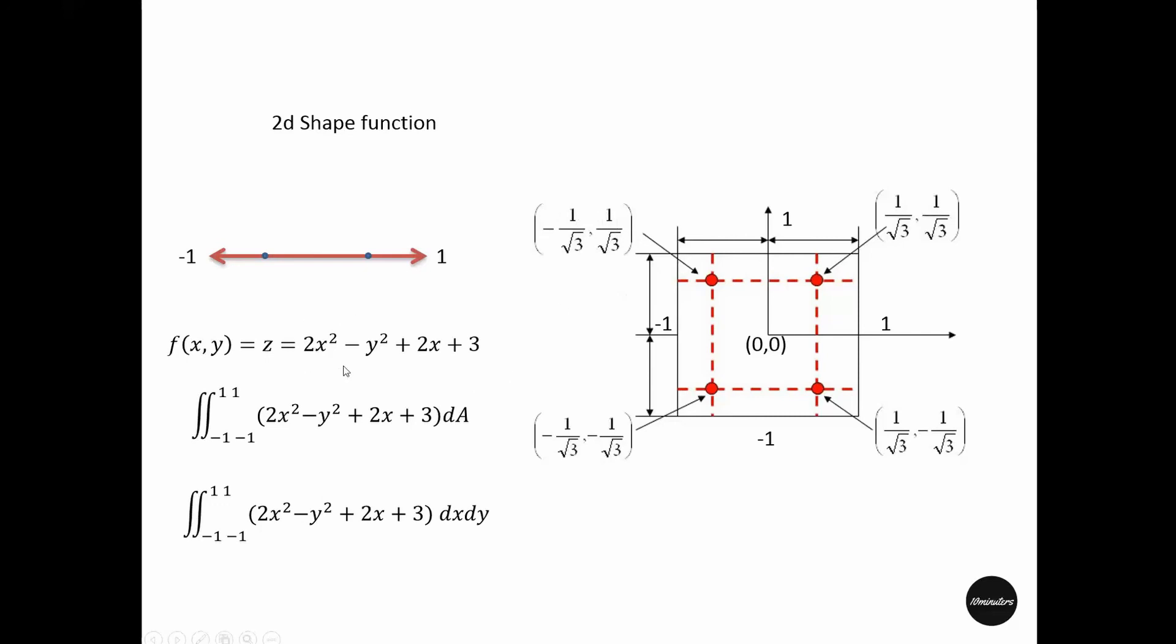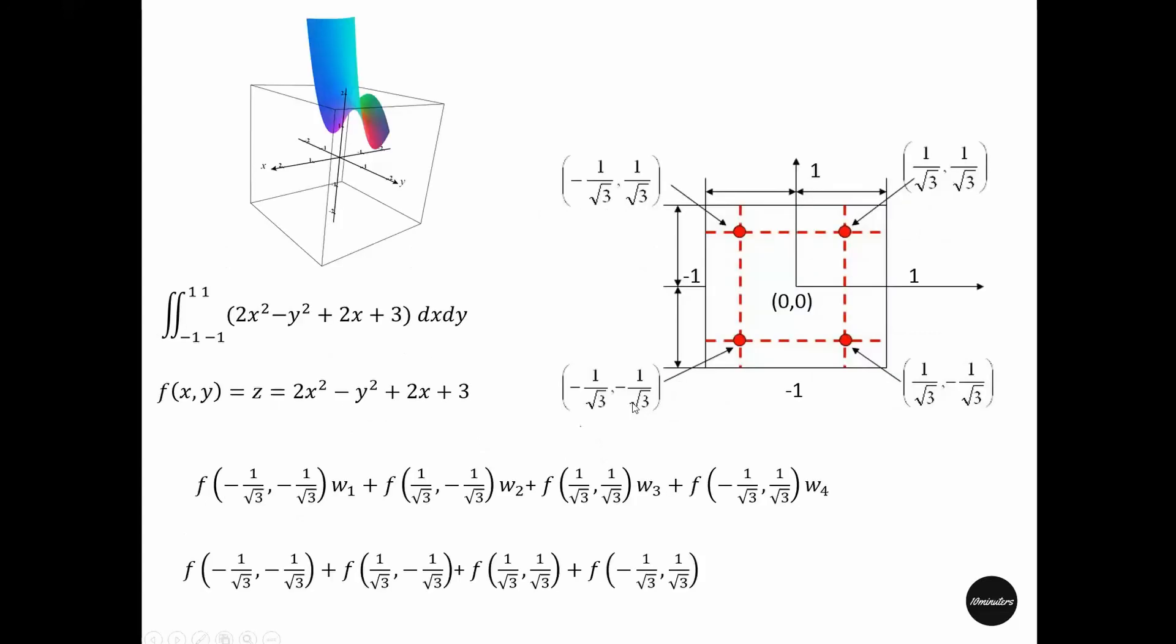So we have four Gauss points with two coordinates to be put in this equation for integration. So what we are going to do, we will for x, we will put this value and for y, we will put this value and evaluate this particular function. We will do the same for this Gauss point, this Gauss point and this Gauss point and add everything together. And by doing that, we will get the integral of this function within this limit without doing the integration. It's similar as we did with one variable.